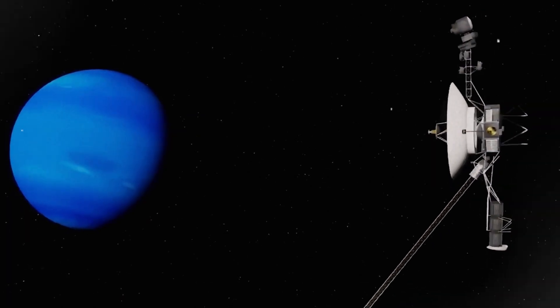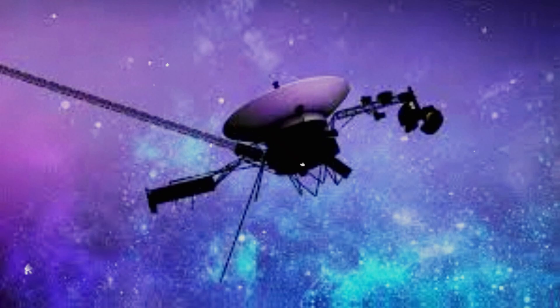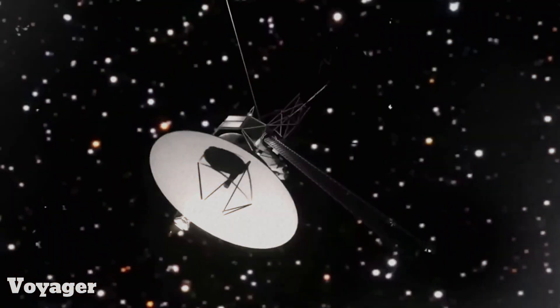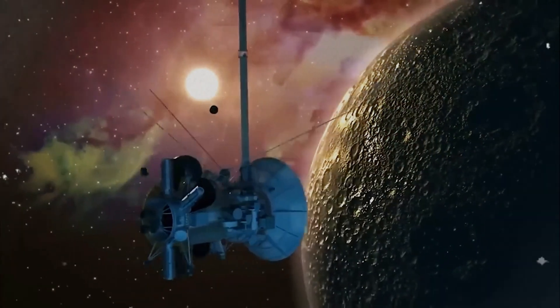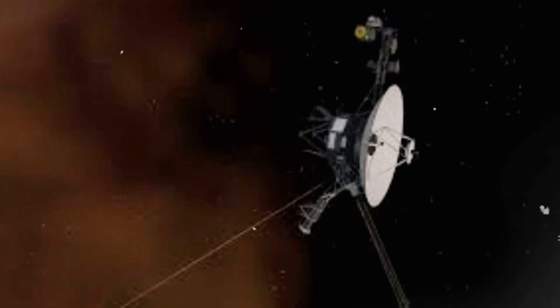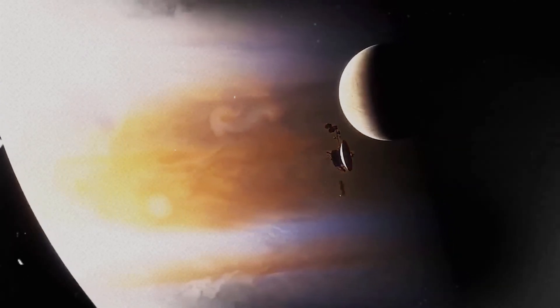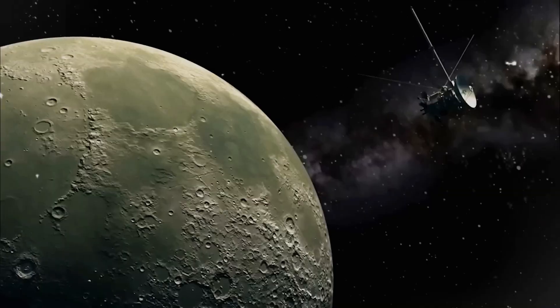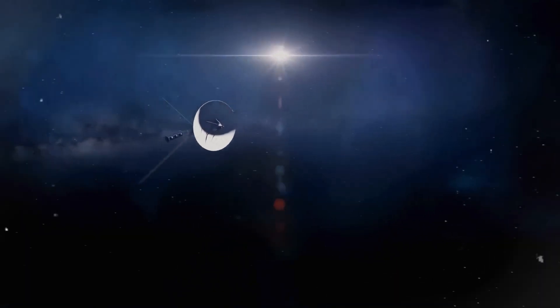Continuing the Voyager 1 mission, especially with recent flight data system issues, underscores the system's role as Voyager 1's central nervous system. Its ability to process data independently is crucial as it explores deep space. To extend Voyager 1 and 2's missions, NASA had to make tough choices, like turning off heaters and non-essential components to conserve energy. This has kept vital parts like the high-gain antenna operational for communicating with Earth.